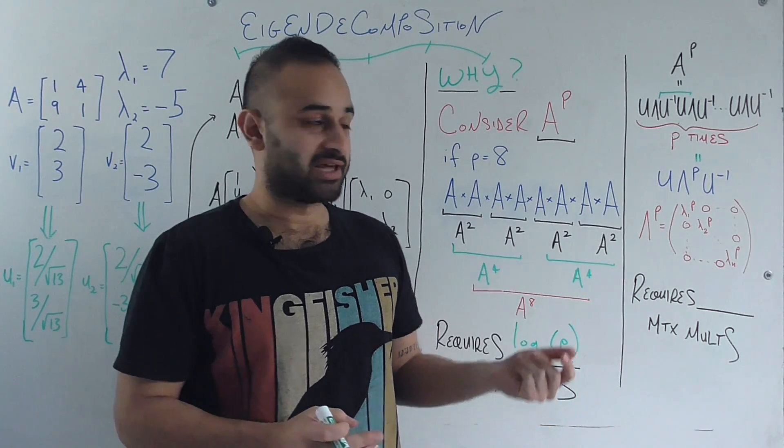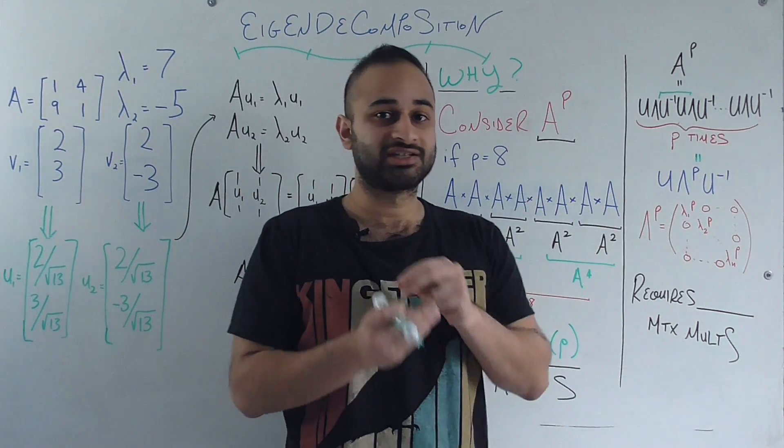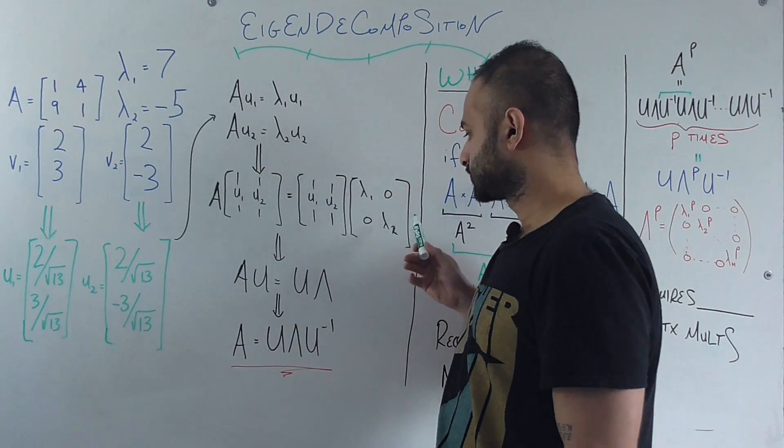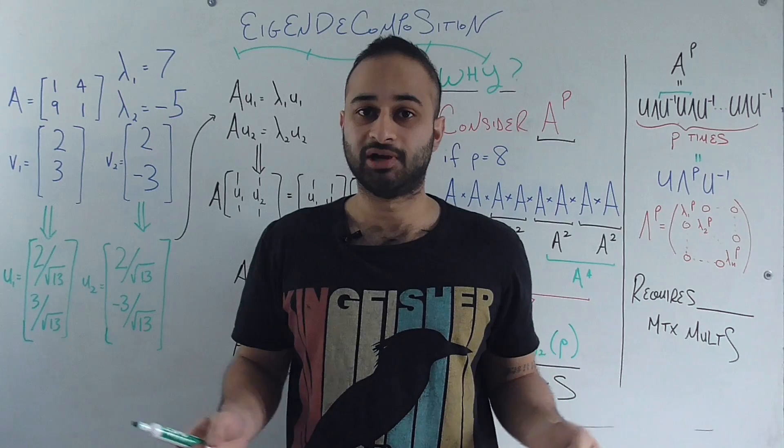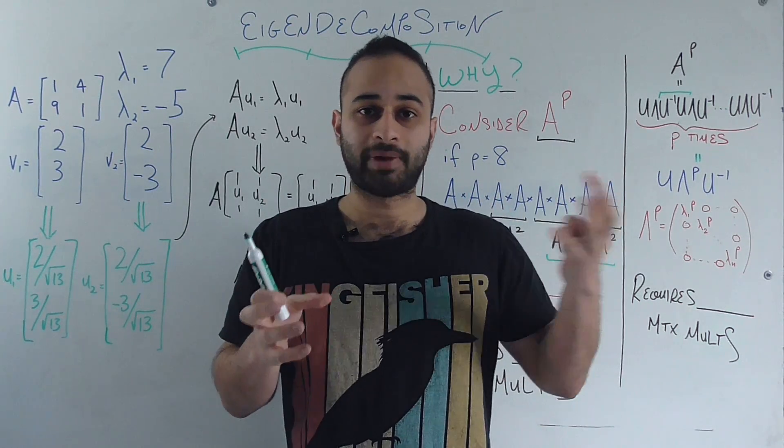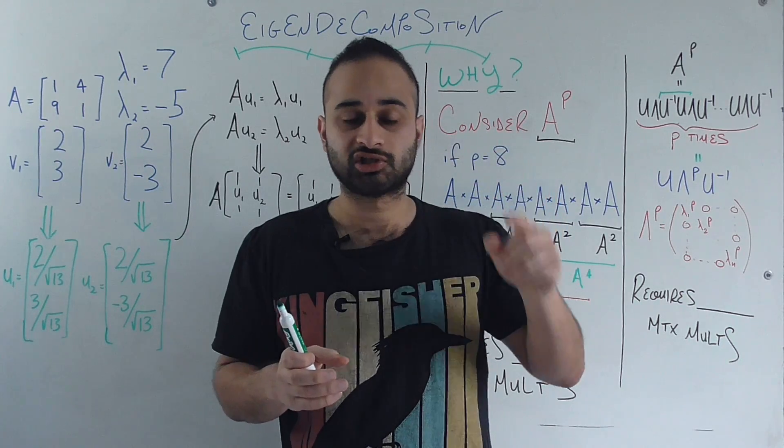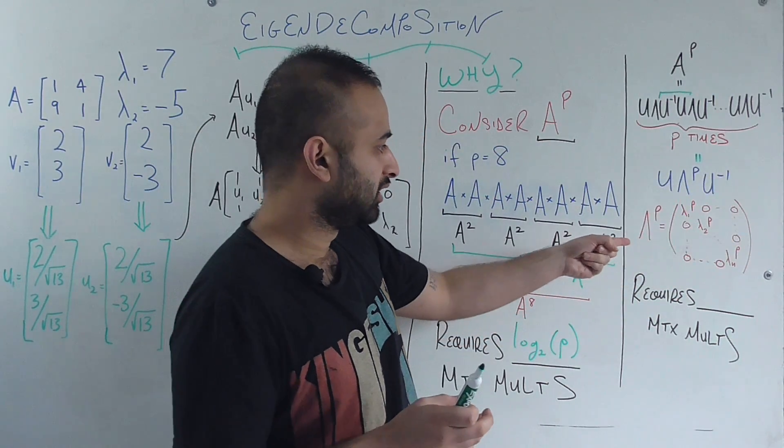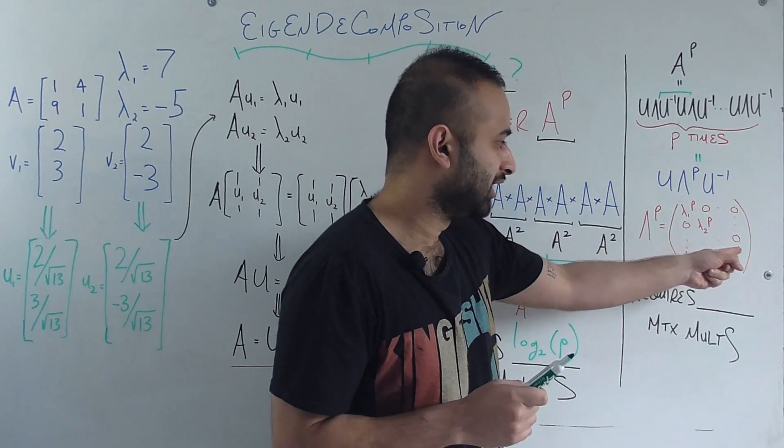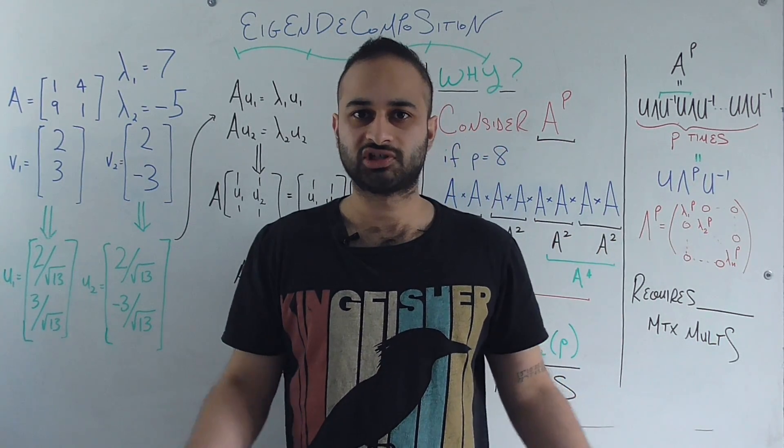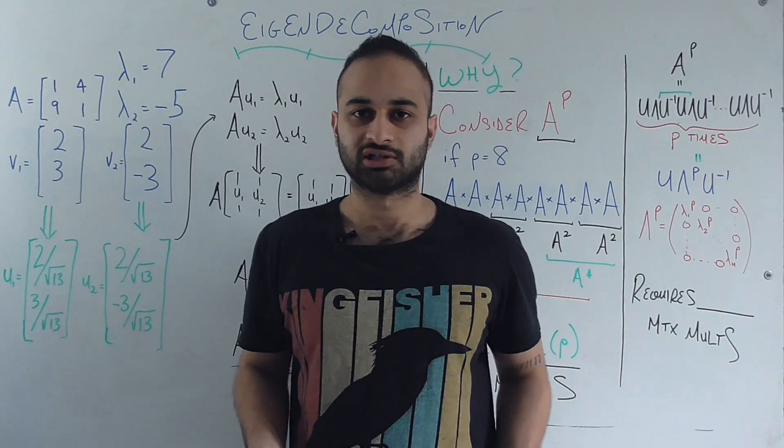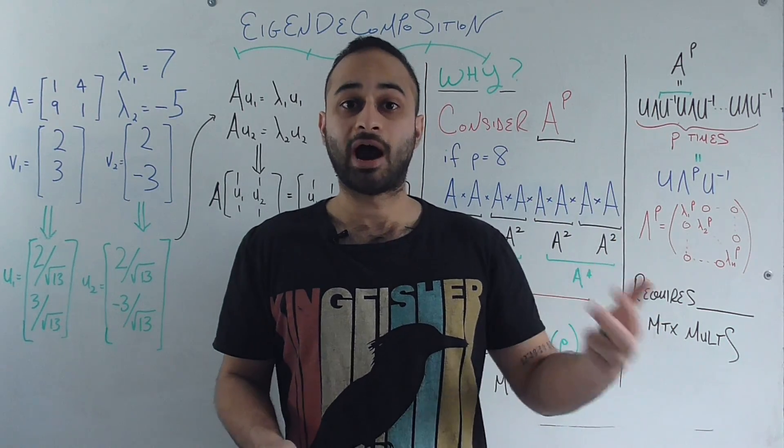Now, the other big note is that lambda to the power of P is actually extremely easy to compute. Why? Because lambda is a diagonal matrix, which means that the only non-zero entries in the matrix would live on the diagonal, which means that taking that whole matrix to a power is the same thing as just taking any of the diagonal elements to the power of P. That's written here as lambda to the P would be lambda 1 to the P, lambda 2 to the P, all the way to lambda n to the P, and everything else would be zero. So this is not really as intense as doing a true matrix product. It's literally just taking n numbers and raising them to some power.